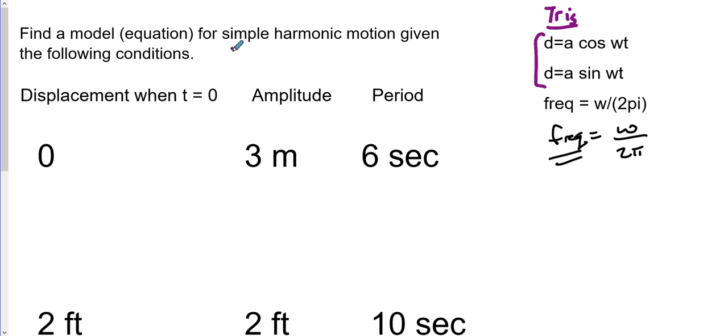There are two different types of basic simple harmonic motion equations or models that we will use: one with cosine and one with sine. They can be used interchangeably depending on the constraints or the conditions that we have.